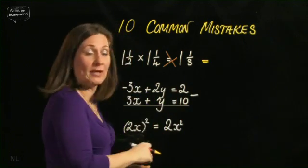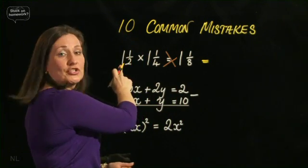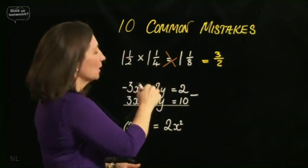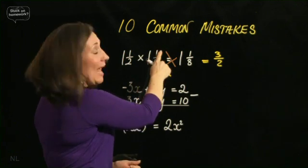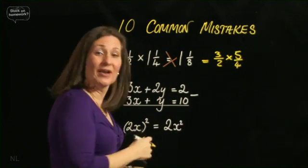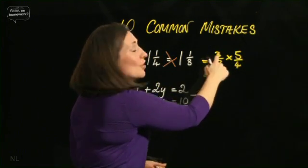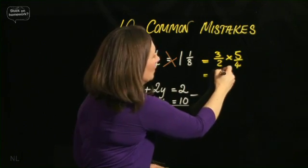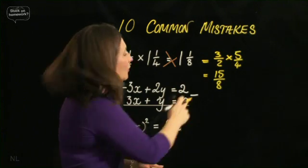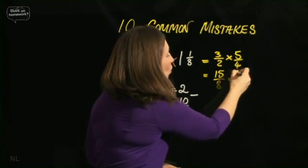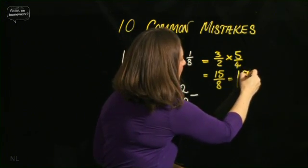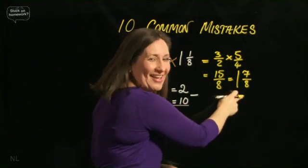2 times 1 is 2. Add that 1 there. It's 3 halves. 4 times 1, 4. Add 1, 5 quarters. And now I can multiply the top and the denominators as well. 3 times 5 is 15. Over 2 times 4 is 8. Which is a top-heavy fraction. So divide 8 into 15. That goes 1. And 8 up to 15, the remainder, 7. 7 eighths. That's the correct answer.